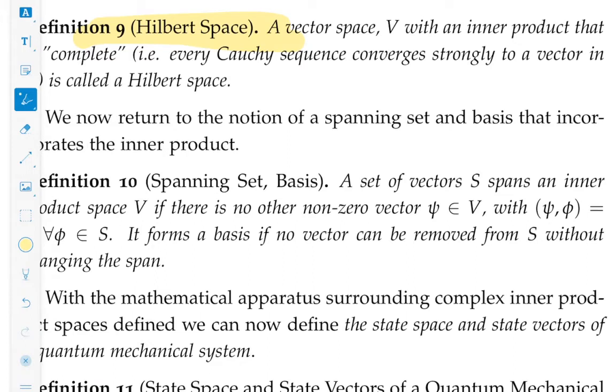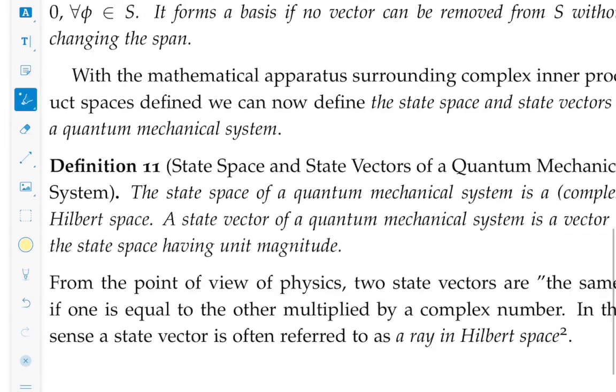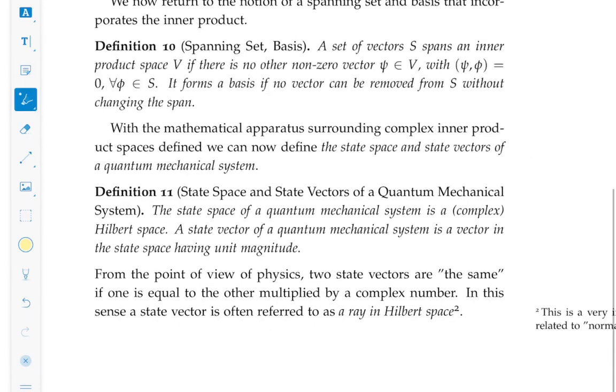Often in applications, you think of Hilbert space as often introduced as an infinite dimensional, an infinite number of basis vectors describing that. That doesn't have to be the case. It's just a vector space with an inner product that is complete in this sense. Now, the reason that's important is we're going to talk about the notion of the state space and state vectors of a quantum mechanical system.